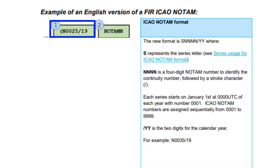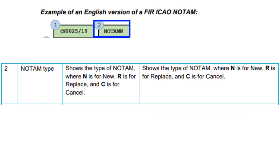Next, you'll see something like NOTAM N, NOTAM R, or NOTAM C. NOTAM N means that this is a new NOTAM. NOTAM R means that this replaces a previous NOTAM. And NOTAM C means that this cancels another NOTAM.